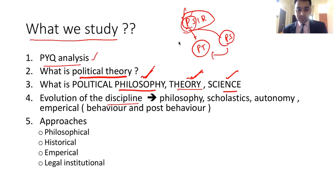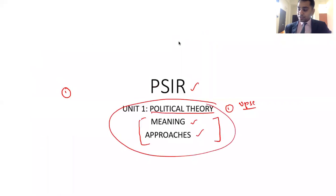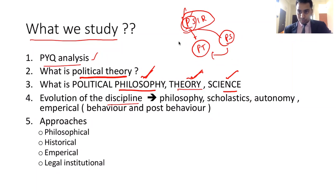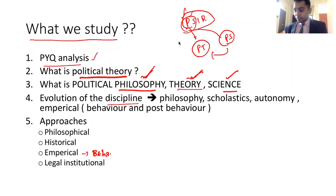The second component — points two, three, and four — is the first component in your syllabus, called 'Meaning of Political Theory.' Point five is 'Approaches to Political Theory': philosophical approach, historical approach, empirical approach, and legal-institutional approach. The empirical approach is also known as the behavioral approach. After the behavioral approach, there is one more approach called the post-behavioral approach, and then the modern approach. These are the things we will discuss.